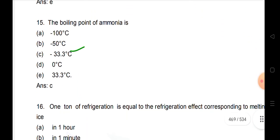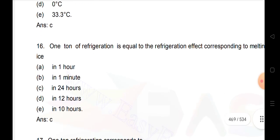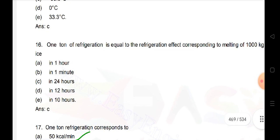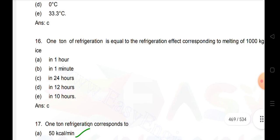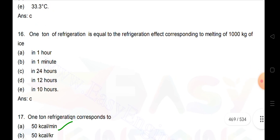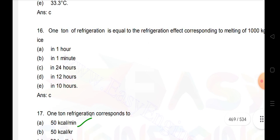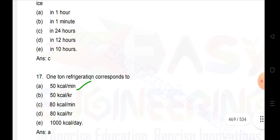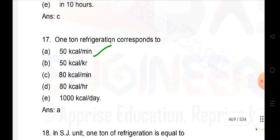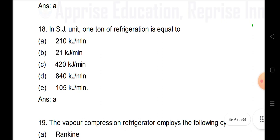The boiling point of ammonia is minus 33.3 degrees Celsius. One ton of refrigerant is equal to the refrigeration effect corresponding to melting of 1000 kg of ice in 12 hours. One ton of refrigerant corresponds to 50 kcal per minute. In SI units, one ton of refrigerant is equal to 210 kJ per minute.